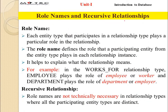Next is role names and the recursive relationship. The role that a particular entity plays inside a relationship is defined by the role name. Each entity type that participates in a relationship type plays a particular role in that relationship. The role name actually defines the role that a participating entity plays in each relationship instance, helping to explain what the relationship means.